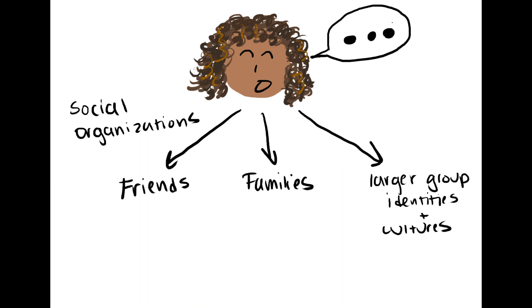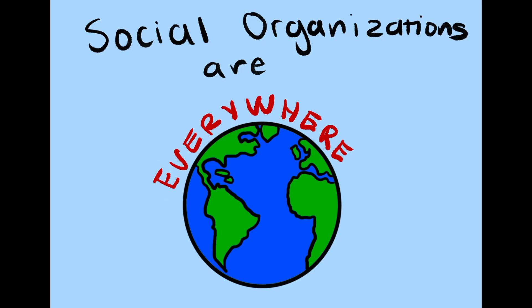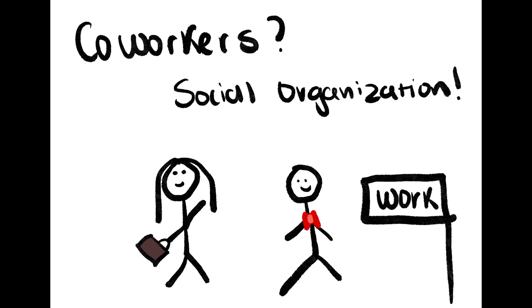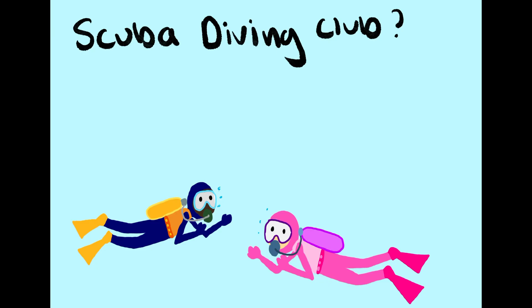Social species create many social organizations, with groups ranging from friends and families to larger group identities and cultures. If you think about it, these organizations are everywhere. Coworkers? They're a social organization. Joined a scuba diving club in college? Sounds like a social group to me. Also, where do I sign up?